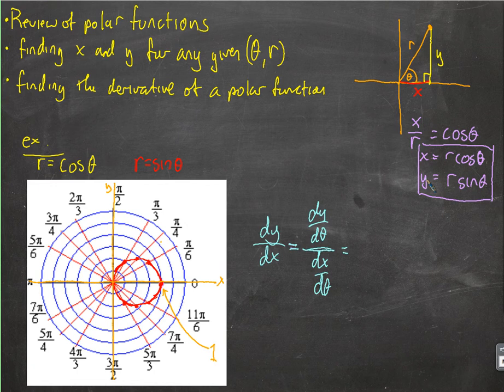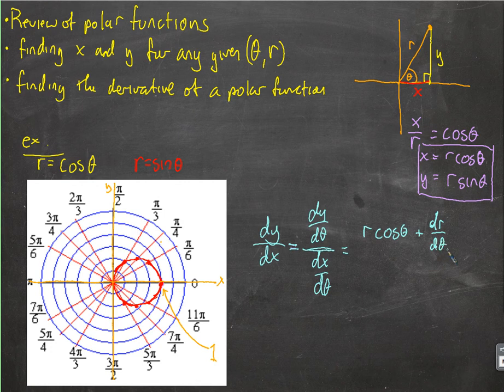Well, what is dy d theta? Well, here is y. The derivative of y with respect to theta just requires the product rule here. So, dy d theta, we're going to use the product rule. We're going to take r times the cosine theta, that's the first part. That's this guy times the derivative of this guy, plus the derivative of r with respect to theta. So, dr d theta, and that means that we're going to have some polar function here, that we're going to take the derivative of with respect to theta. That's what that is. Times just the sine of theta.